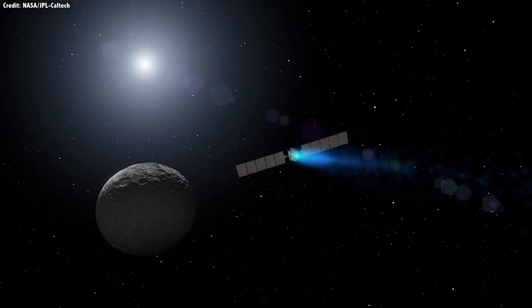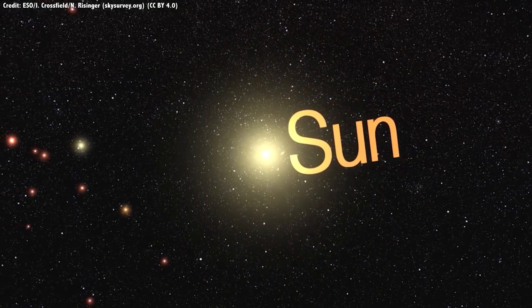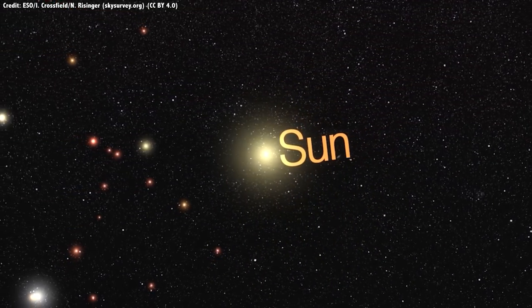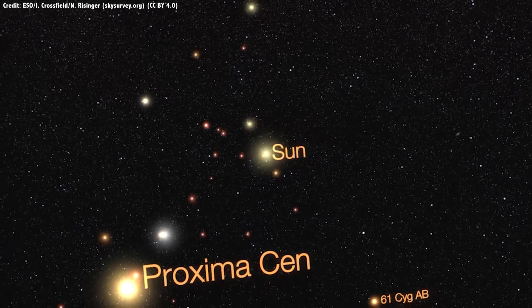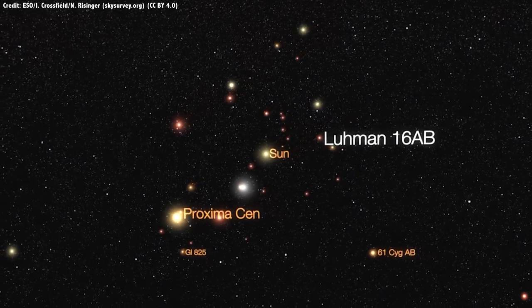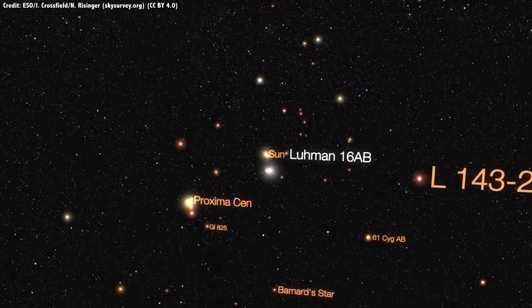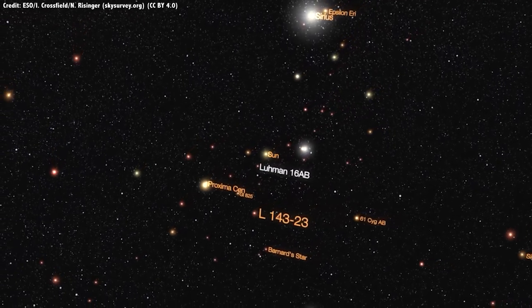But still, even if you had like giant fuel tanks of hydrogen that you brought on your spacecraft, and they're very efficient, you still aren't going to get enough of a boost to be able to fly quickly from star to star. You will run out of fuel before you've accelerated very far.